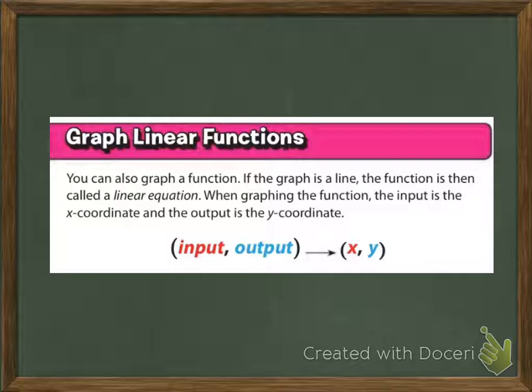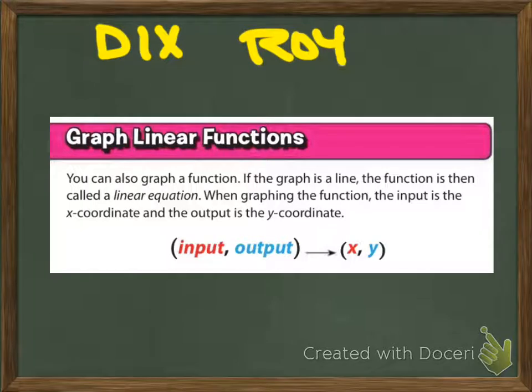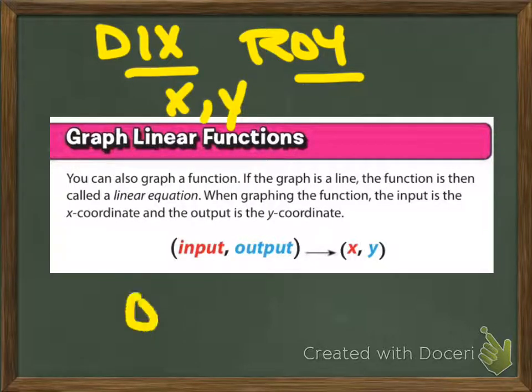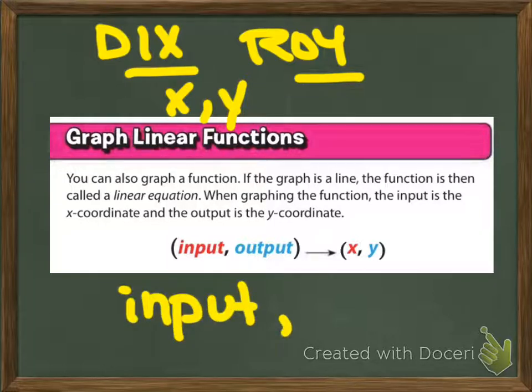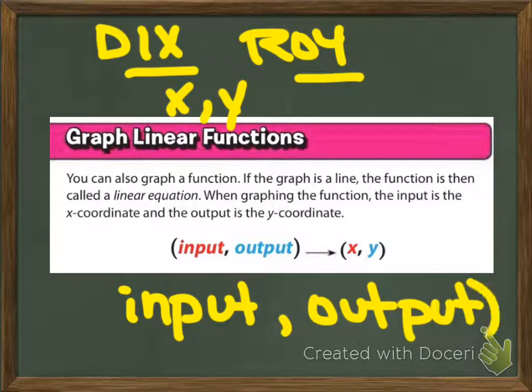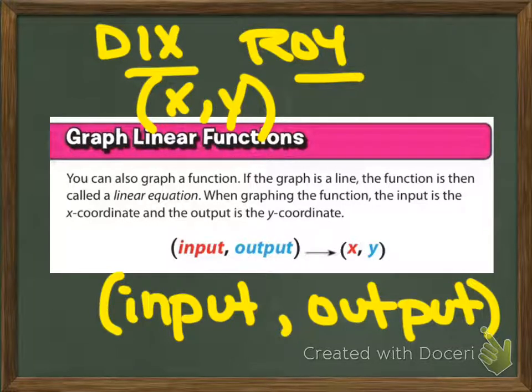So graph linear functions. You can also graph a function. If the graph is a line, the function is then called a linear equation. When graphing a function, the input is the X coordinate and the output is the Y. We've already talked about this with our Dixon-Roy, where the input is our X and the output is our Y. So X comma Y is the same as input comma output. Don't forget that our input is our X and our output is our Y.